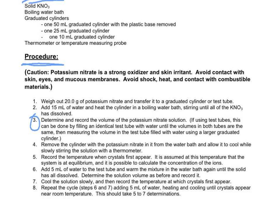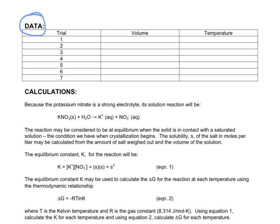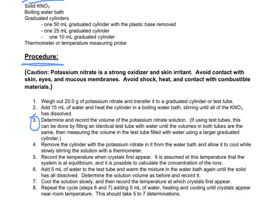Then add five milliliters of water to the test tube, warm it back up until the solid is dissolved again, then take it out, let it cool, and measure when the crystals appear. It should take a little longer this time because you've diluted the solution. You keep doing this until the crystals start to appear only when cooled almost to room temperature. We may or may not get that far, but if you only get four or five trials, that's probably still okay since you need the data to make a graph.